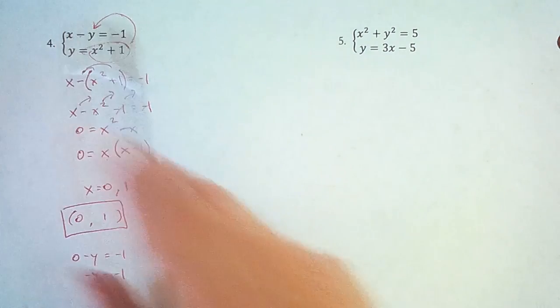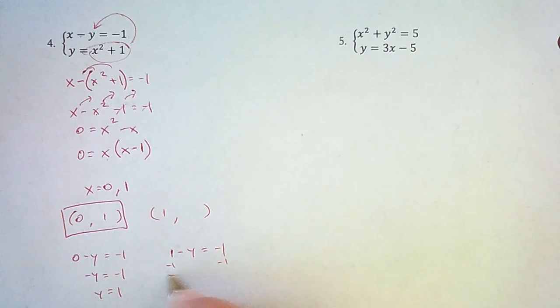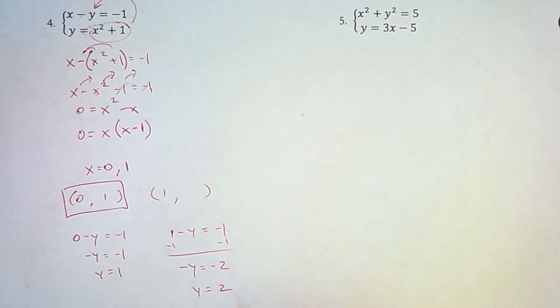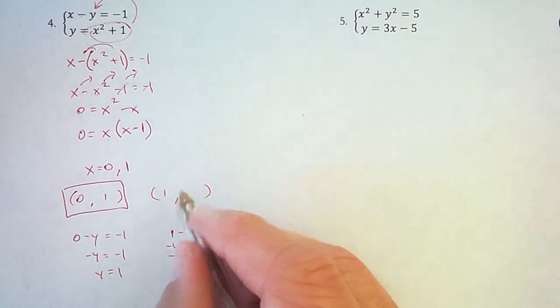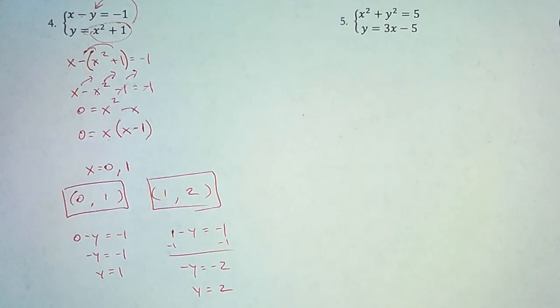Then I'll plug in a 1 for x. So 1 minus y equals negative 1. And I'll subtract that 1, and I'll get negative y equals negative 2, which means positive y equals positive 2. So (1, 2) is my second solution.